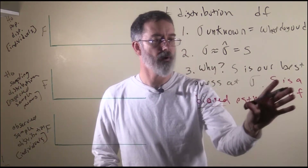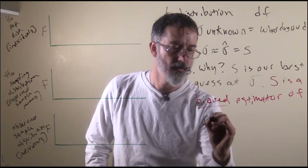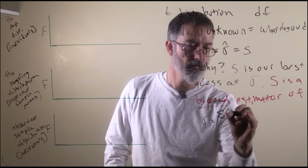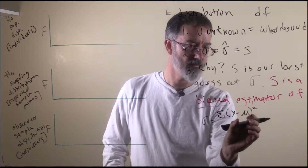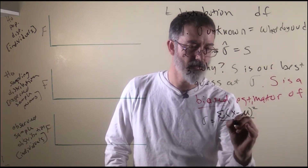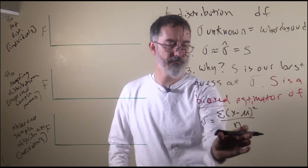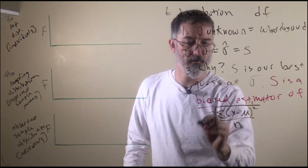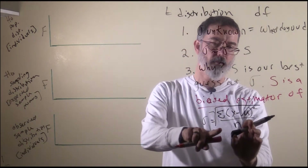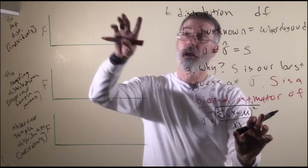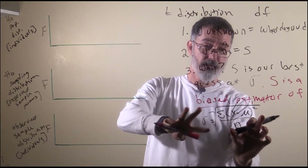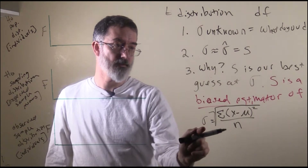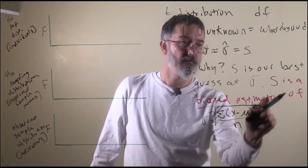Let me explain why S is a biased estimator. The formula for the population standard deviation is: take the scores minus the mean, square those differences, add them up, and divide by the total number of scores — that gives you the variance. Then take the square root to get the standard deviation. If we used this formula on a census, we would properly calculate the population standard deviation.